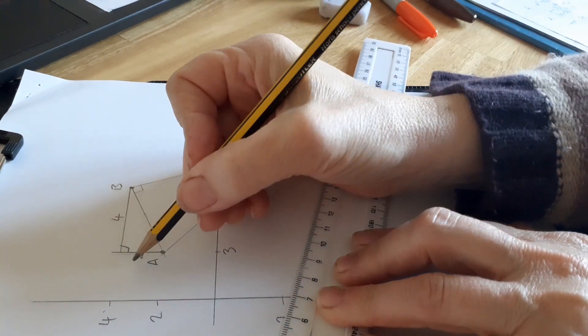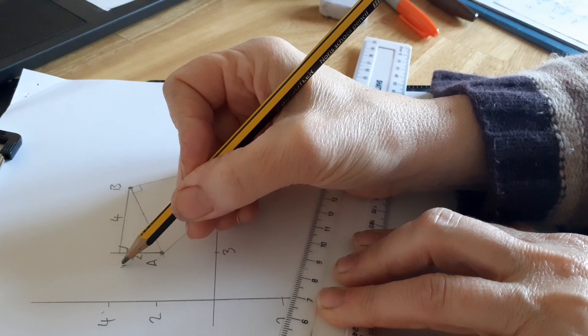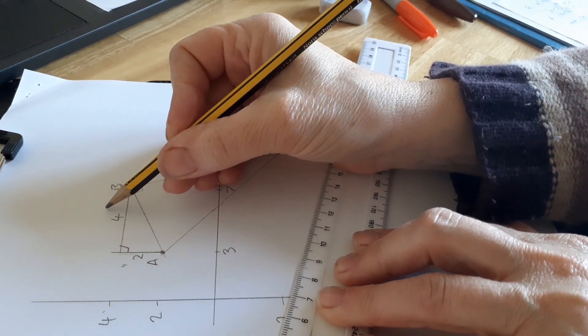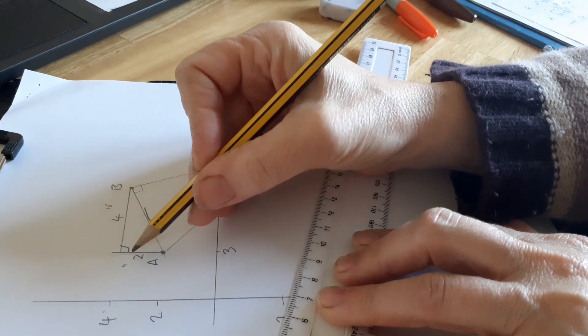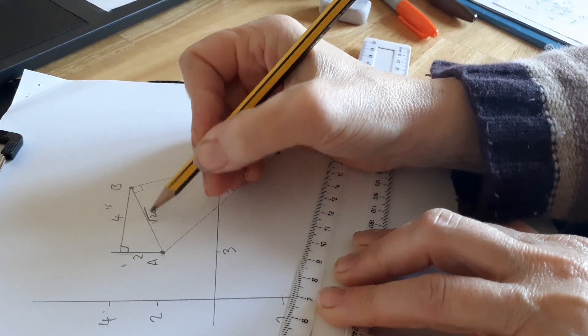So if I square each side, square 2 I get 4, just put that there, square 4 I get 16. So this side is the root of 16 add 4, it's the root of 20, and I'm going to leave it like that. I'm not going to work it out.